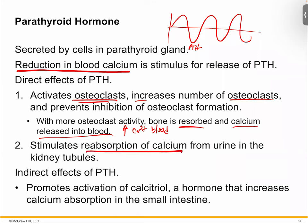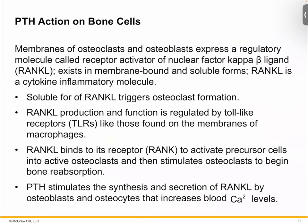PTH also tells the kidneys to retain calcium rather than losing it in urine. When calcium is low, you don't want to pee away what you have. PTH stimulates calcitriol production from the kidneys, which allows you to absorb more calcium from your intestines. So you're attacking calcium deficiency on multiple fronts simultaneously.